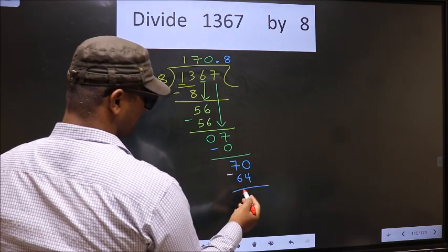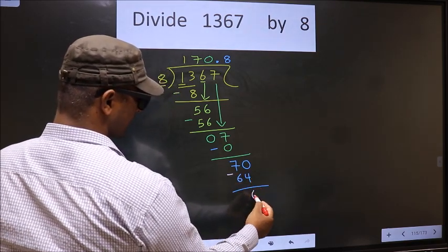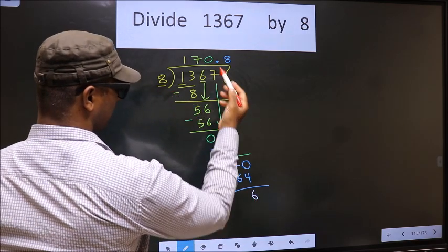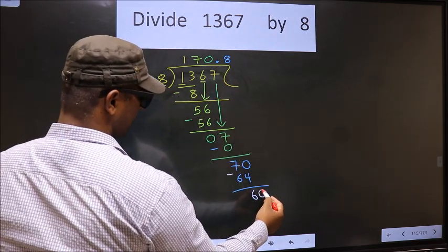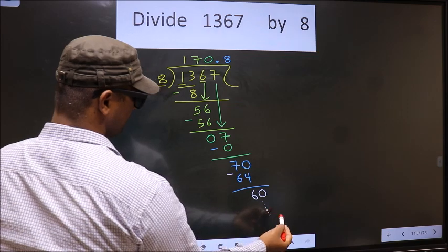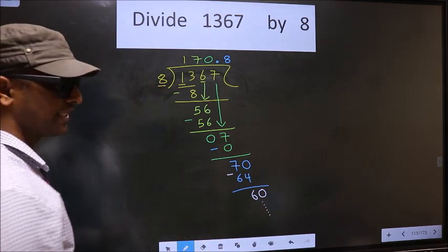Now you subtract. 70 minus 64 is 6. 6 smaller than 8. We already have decimal, so you directly take 0 and continue the division. I am not doing that.